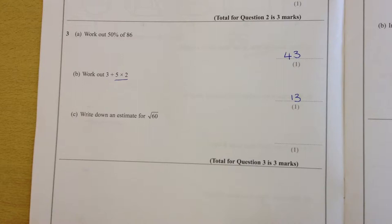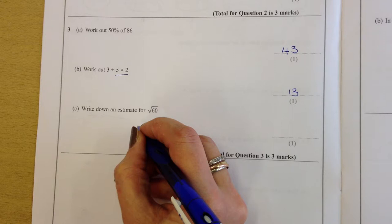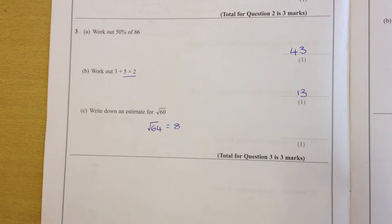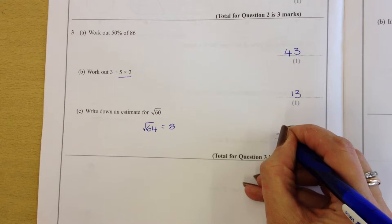Next one. Write down an estimate for the square root of 60. The square root of 64 equals 8. Therefore, it's close enough to that, so anything between probably about 7.8 to 8 would be fine in the answer.